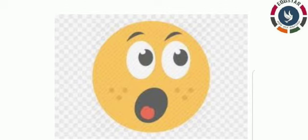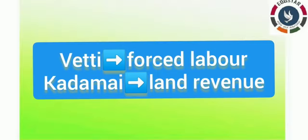Revenue was also collected from traders. From inscriptions, it is known that the Cholas collected 400 types of taxes. The taxes were mentioned as vetti and kadamai. Vetti is forced labor — that is, people had to work for the kingdom without being paid. Kadamai is land revenue or land tax. They also collected taxes for torching houses, using a ladder to climb palm trees, and on succession to family property. In this way, taxes were collected during the Chola period.